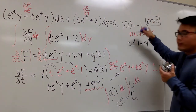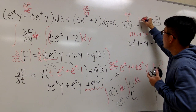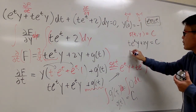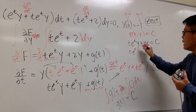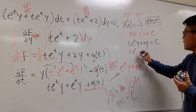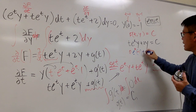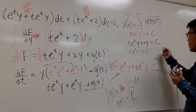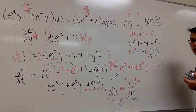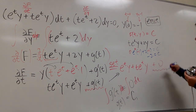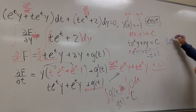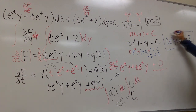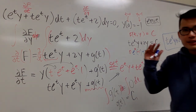However, we do have an initial value: at T equals 0, Y equals negative 1. Substituting into the general solution: 0 times e to the 0 times negative 1 plus 2 times negative 1 equals c. This gives 0 plus negative 2 equals c, so c equals negative 2. The final answer is: T e to the T times Y plus 2Y equals negative 2.